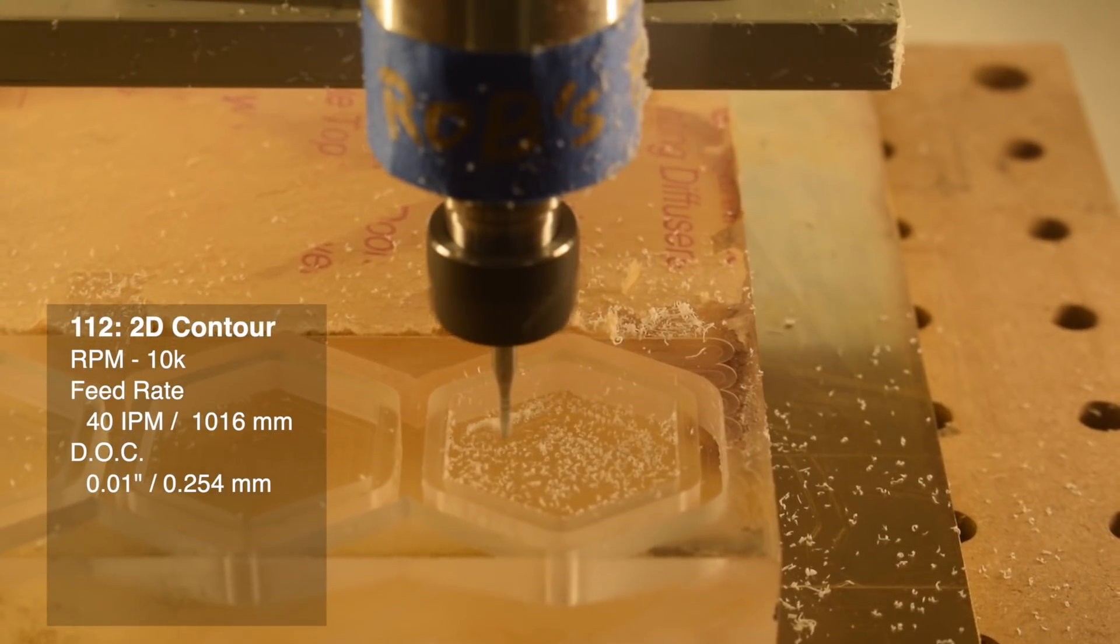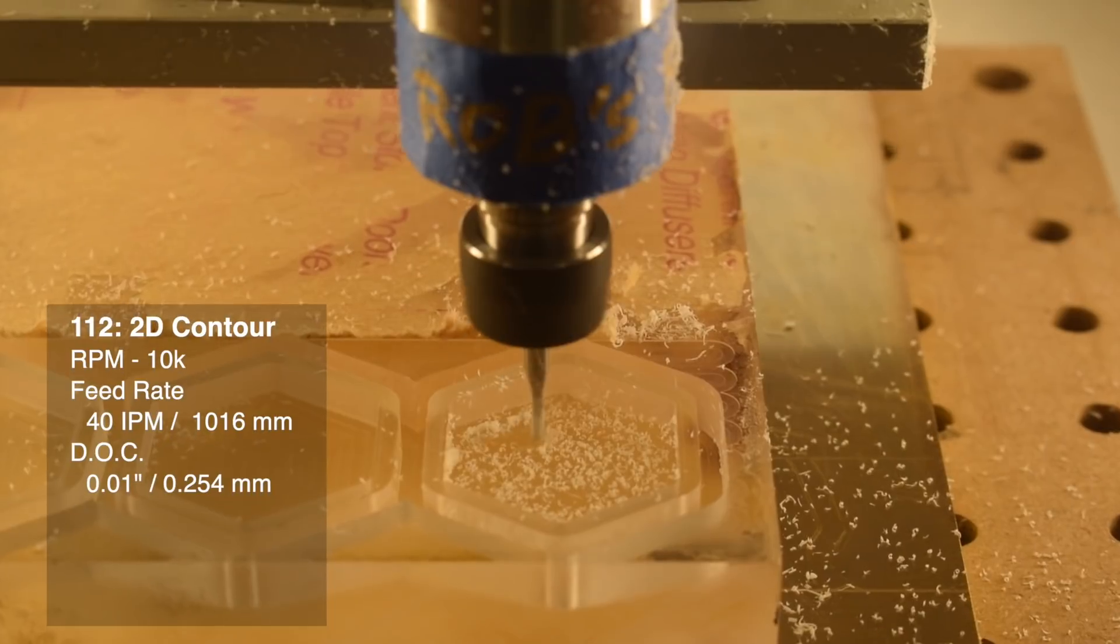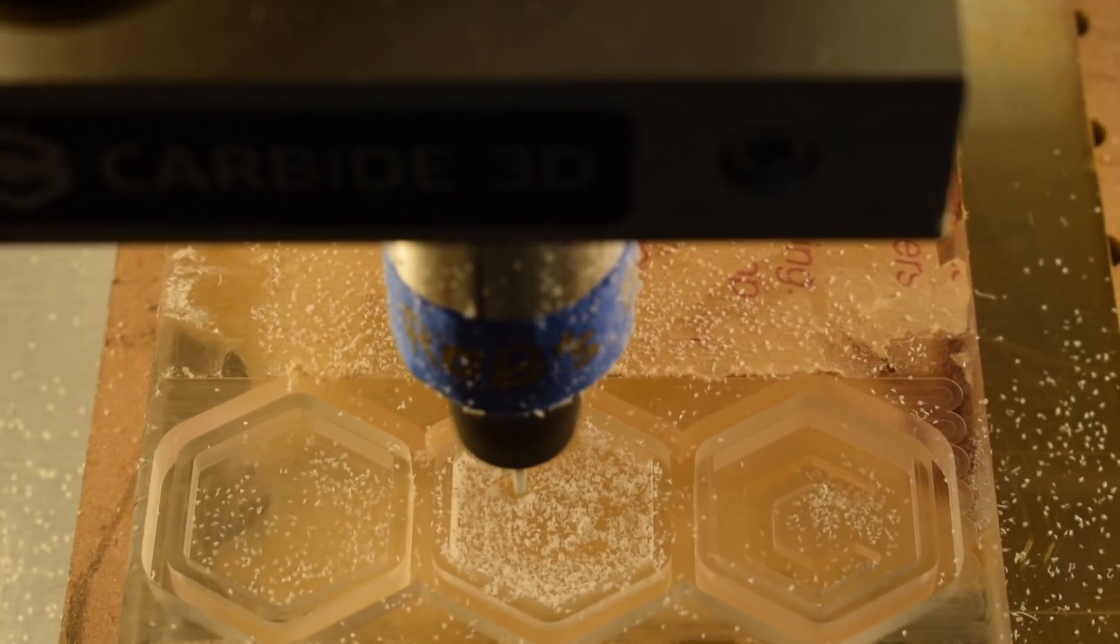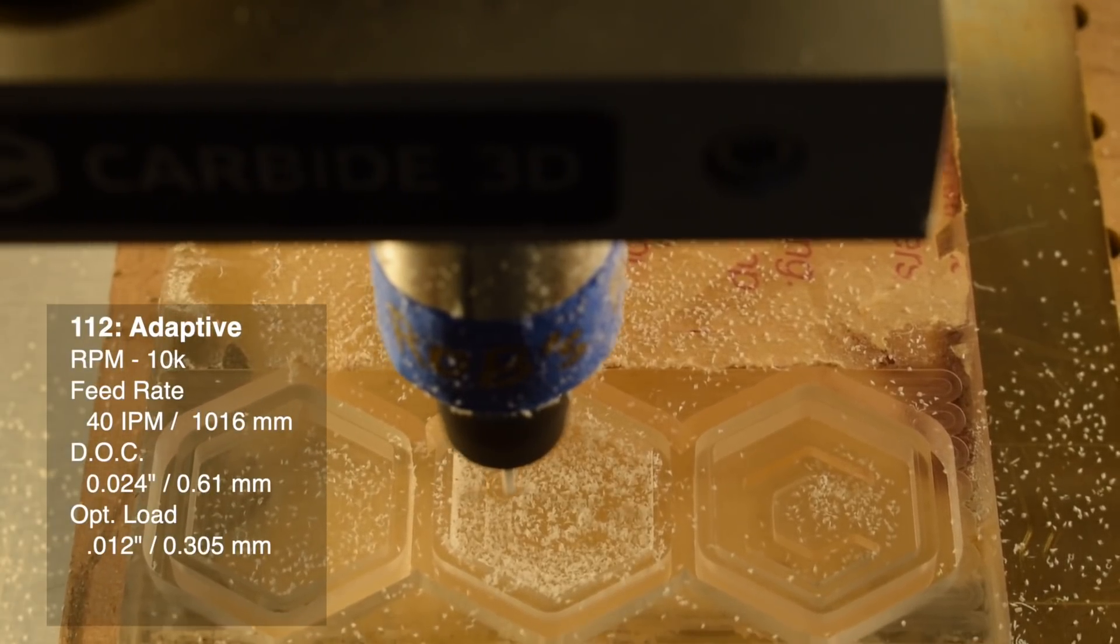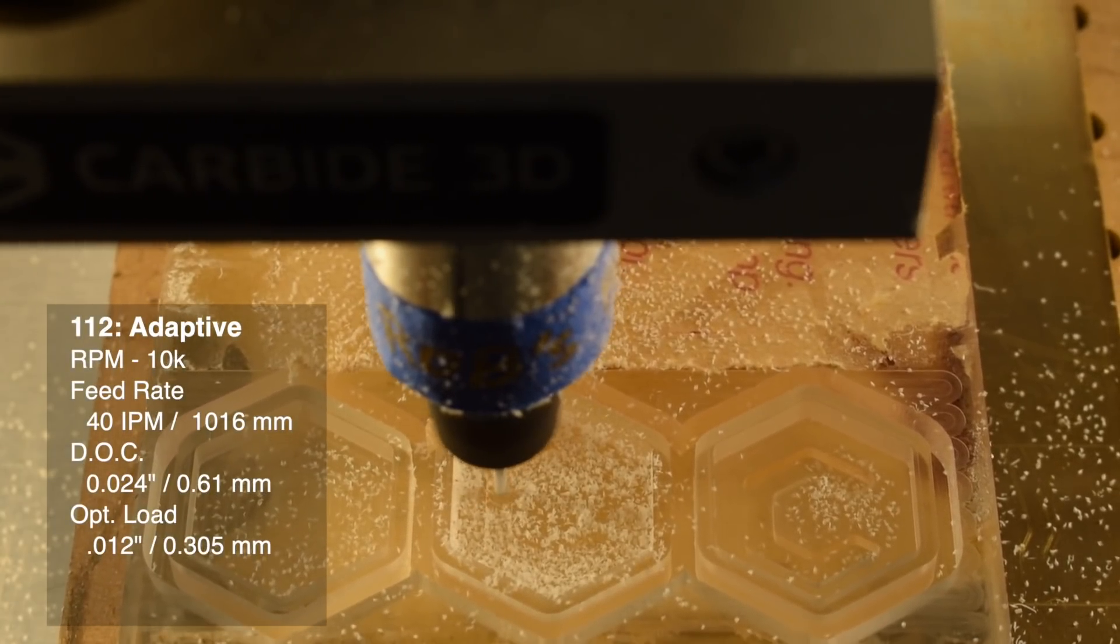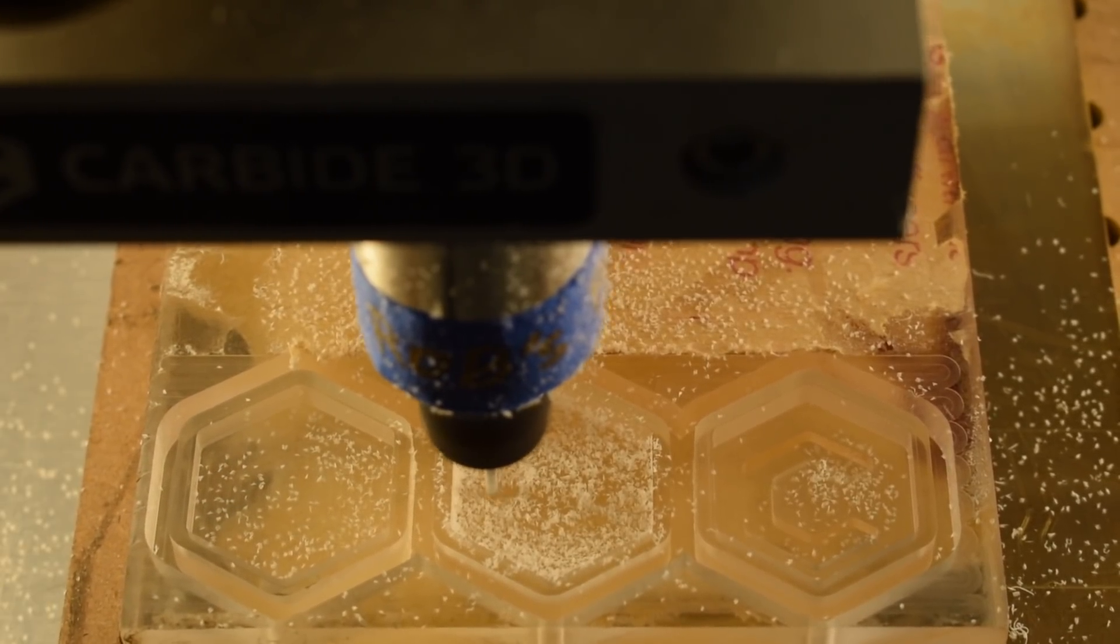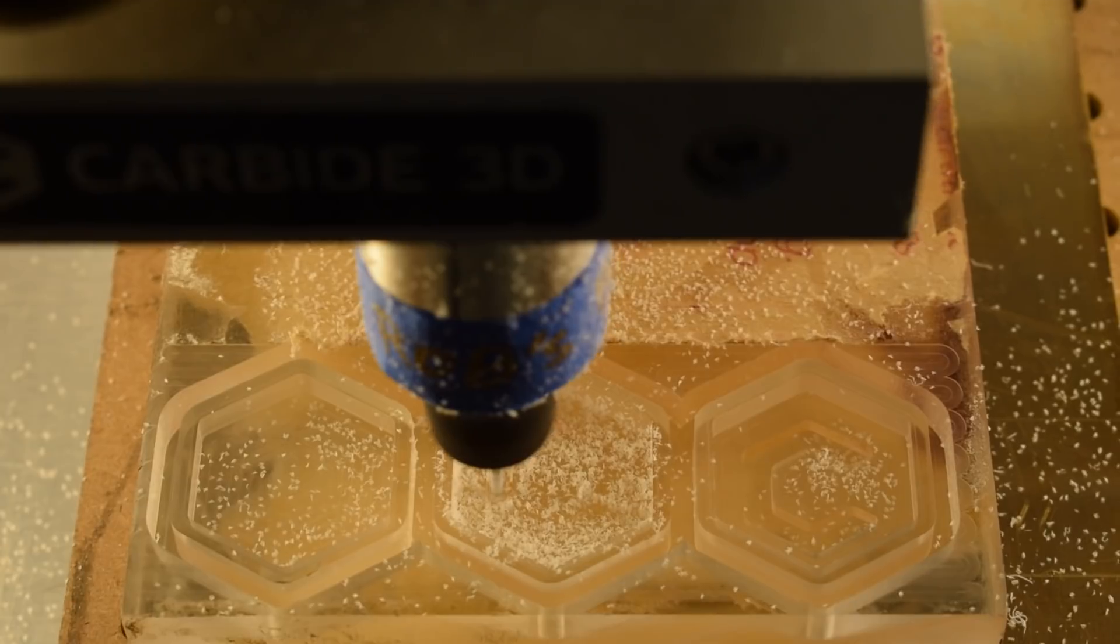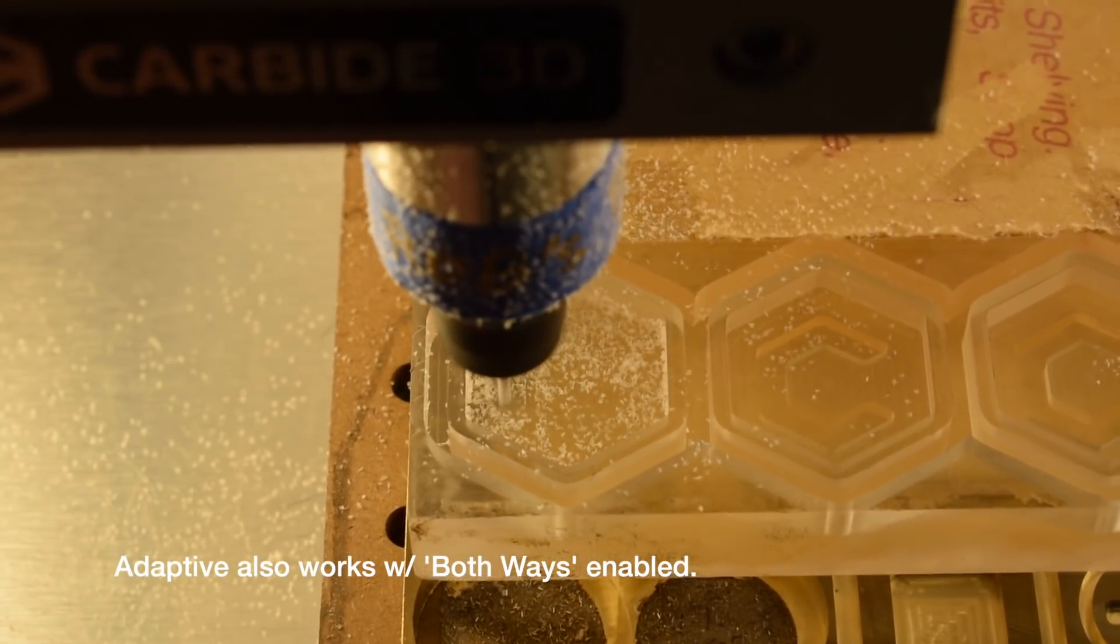And basically the same thing for slotting, but you need to be extra careful with chip evacuation because the narrower cuts will really trap shavings. You can also use adaptive clearing, and that looks like 10,000 RPM, 40 inches per minute, a 0.024 inch depth of cut, and a 0.012 inch optimal load. In the long narrow shape I'm cutting out, adaptive faces a time penalty versus regular pocketing. But in a more open cavity, the machining time difference should be much closer.